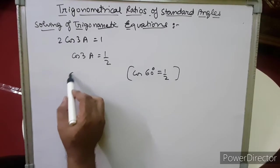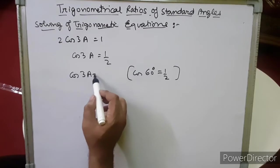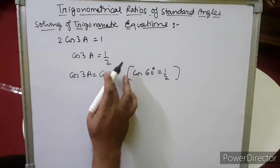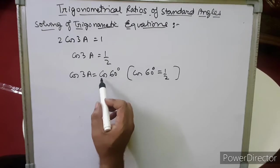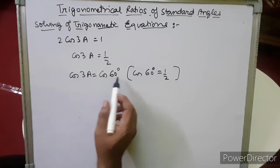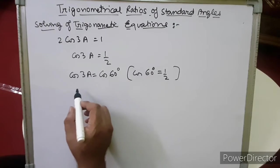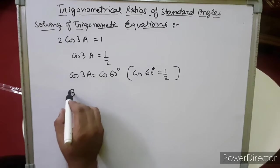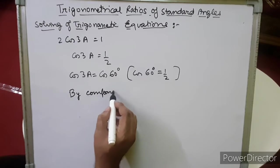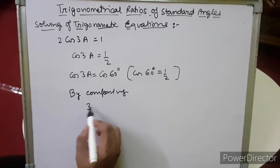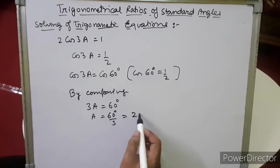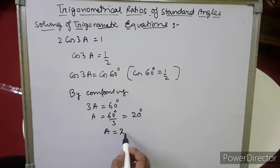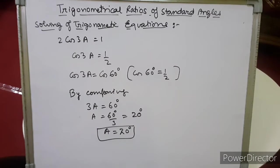We substitute cos 60° in place of 1/2, because cos 60° = 1/2 — either we write 1/2 or cos 60°, they mean the same. By comparing the angles, we get 3a = 60°. Cross multiplying 3, we get 60°/3 = 20°. So the value of angle a is 20°. This is how we calculate the value of unknown angles.